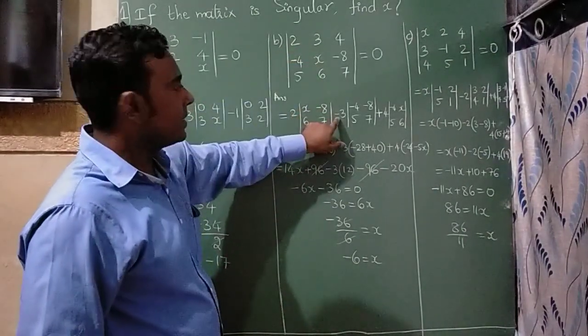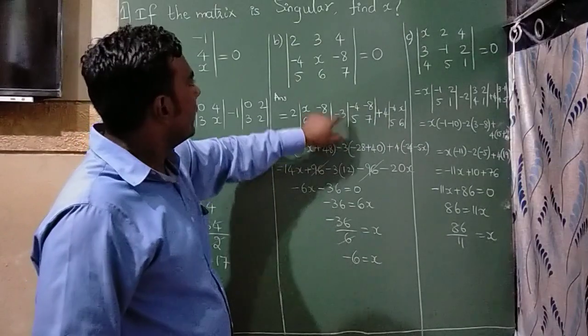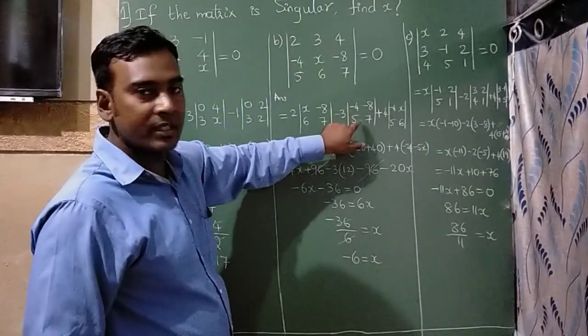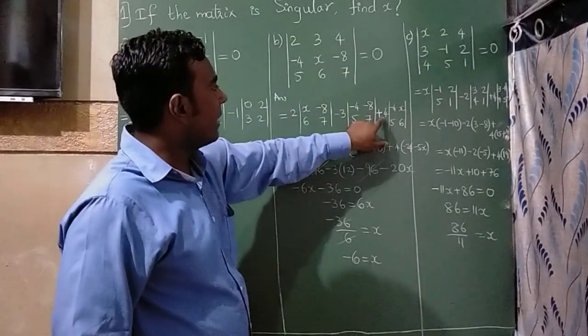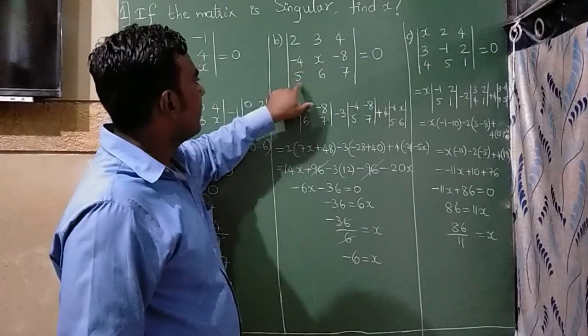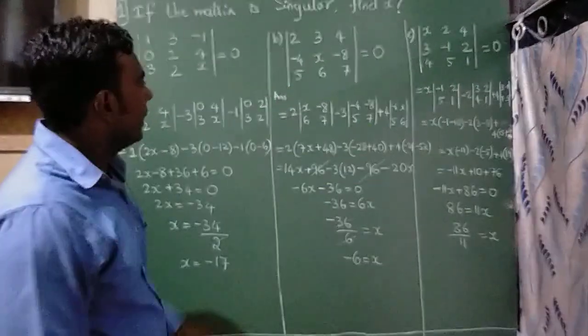And, the second number is, I have written minus 3. Now, if I close this column, you can write -4, 8, 5, 7. You can see here. Next number, I have written 4. If I close this column, -4, x, 5, 6 I have written here.